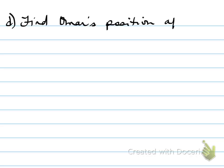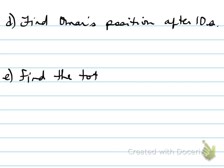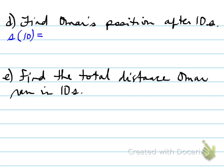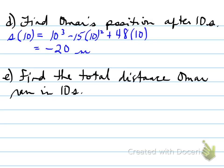Part D: Find Omar's position after 10 seconds and find the total distance Omar ran in 10 seconds. We need to find Omar's position after 10 seconds by plugging in S at 10, and we get a value of negative 20 meters. So he's behind 20 meters, or backwards, or to the left — however you want to describe the direction.